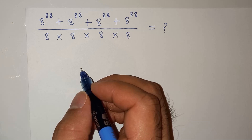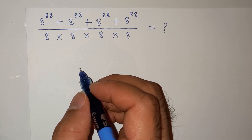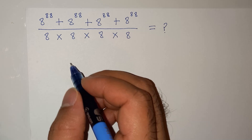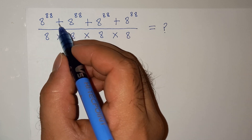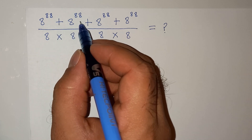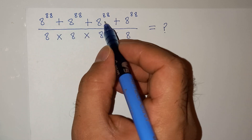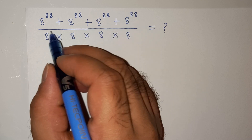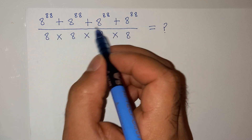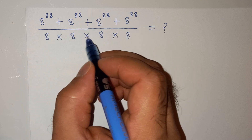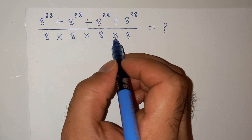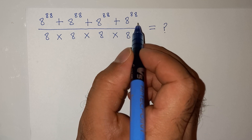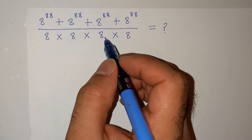Hi guys, welcome back to your channel. We are going to solve an interesting question today, which is 8 power 88 plus 8 power 88 plus 8 power 88 plus 8 power 88, whole divided by 8 multiplied 8 multiplied 8 multiplied 8. We have to find the value of this whole term.